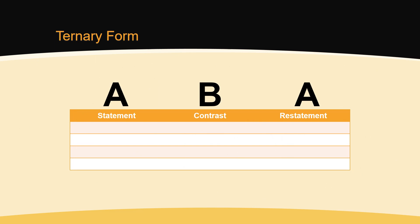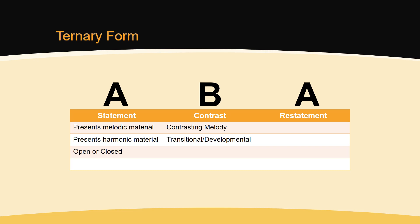The opening A section presents melodic and harmonic material. It can be either open or closed. The B section has contrasting melodic material, can contain modulations, and can be developmental. It too can be either open or closed. The restatement is a return to the opening A material. It is tonally closed, ending in the home key. It can be an exact restatement of the opening A section, or can offer some variation of the opening A section.